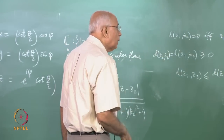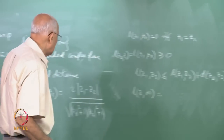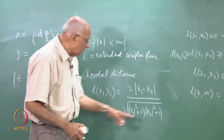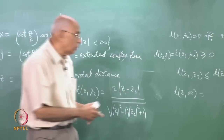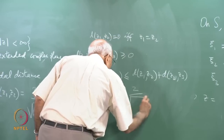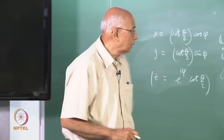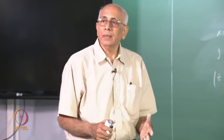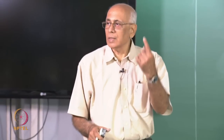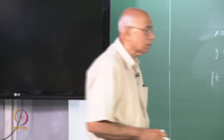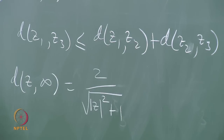The distance to the point at infinity is d(z, ∞) = 2 / sqrt(|z|² + 1). The chordal distance between the origin and the point at infinity is 2, which is the diameter of the unit sphere — the distance between the south pole and the north pole. This notion of chordal distance is extremely useful and one can make a lot of progress using it.